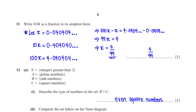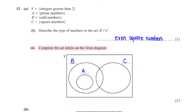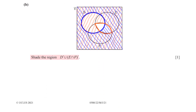The universal set contains integers greater than 2. Set A contains prime numbers, set B contains odd numbers, set C contains square numbers. For B complement intersection C: any number not in B is even, and if also in C it is an even square number. Since all prime numbers greater than 2 are also odd, set A is a subset of set B.